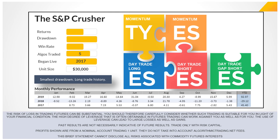The S&P Crusher takes the same two algorithms — the TY and the ES — and adds the three day trades: two short day trades and one long day trade. The returns on the Crusher are in the middle — less than the Swing Trader but more than the Wave Trader. The real strength of the Crusher is the drawdown: it's actually the lowest of any algo we offer on a percent basis. If someone is mostly concerned about drawdowns and doesn't want to go through the emotional ups and downs, this would be one to consider. The win rate is lower than the Swing Trader because of the day trade algos — a 50% win rate day trade will drop the overall average.